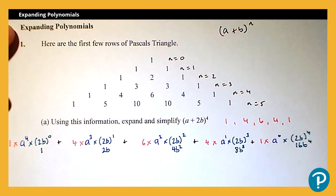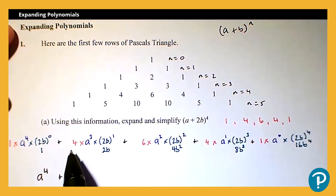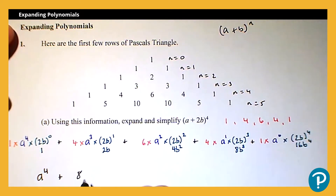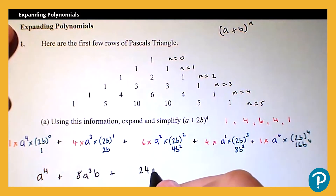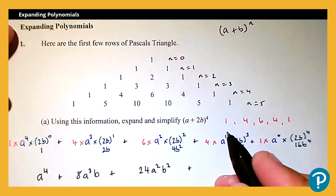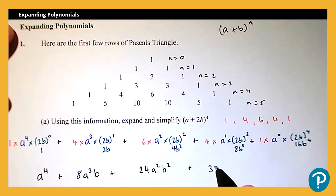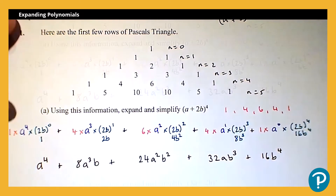Now we can work everything out. 1 × a⁴ × 1 is just a⁴. Then 4 × a³ × 2b: four times two is eight, giving 8a³b. Next, 6 × a² × 4b² gives 24a²b². Then 4 × a × 8b³: four times eight gives 32ab³. Finally, 1 × 1 × 16b⁴ gives 16b⁴, since a to the zero is 1.